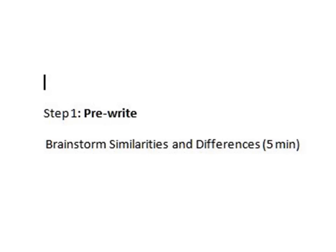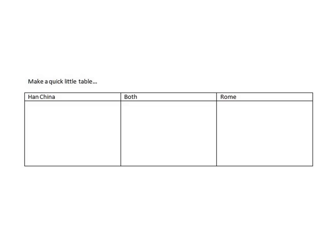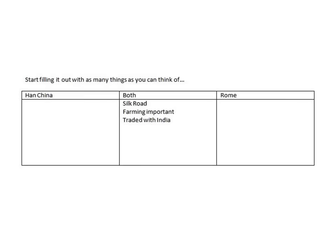Now we get into our pre-write where we brainstorm as many similarities and differences as we possibly can for this topic. I'm going to make a small table with Han China on one side and Imperial Rome on the other side. This allows me to list as many as I can quickly and efficiently. I'm starting with similarities: they both used the Silk Road to transport goods, they both farmed as part of their economy, and both traded with India.